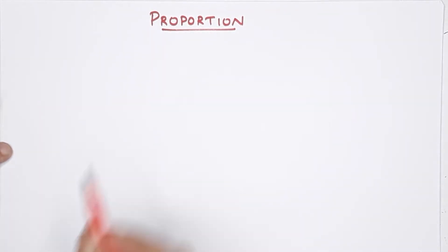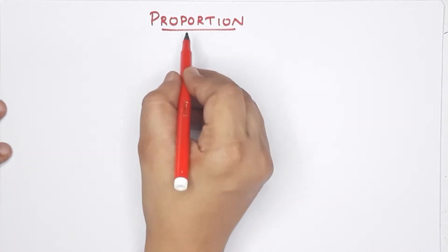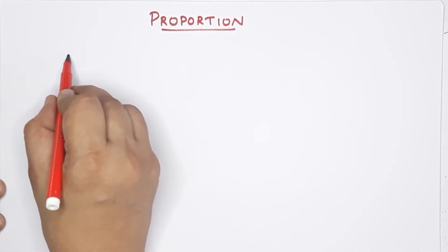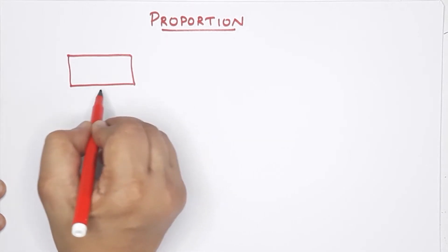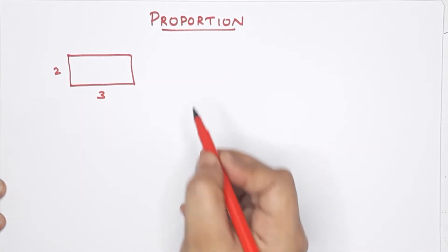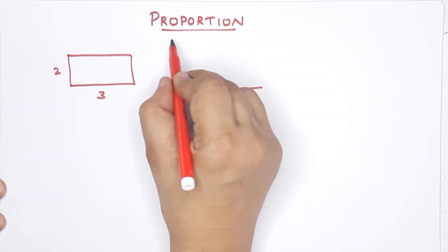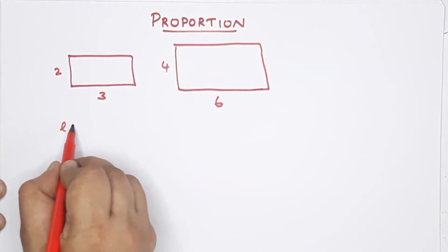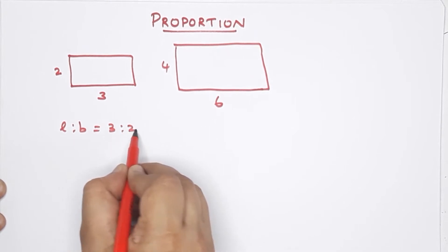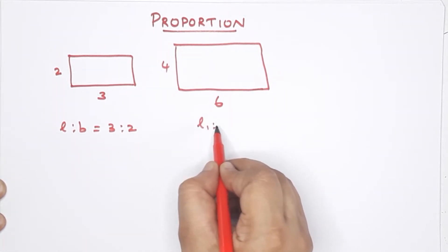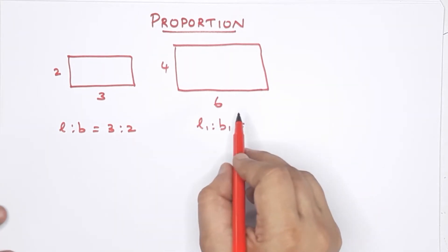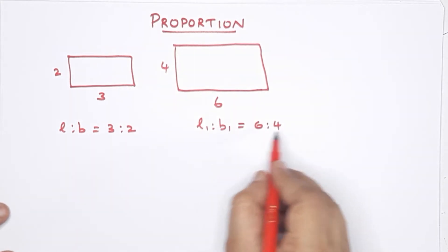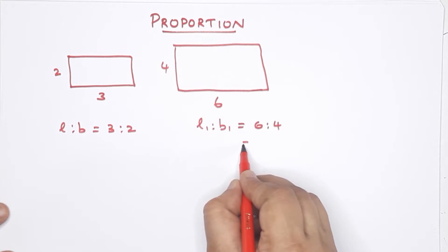The next chapter is proportion. Proportion means that the two ratios are equal — that is one condition. For example, this rectangle is 3 cm and 2 cm. The other rectangle is 6 cm and 4 cm. The length-to-breadth ratio is 3 is to 2. We call this rectangle ratio 6 is to 4, and its simplest form is 3 is to 2.